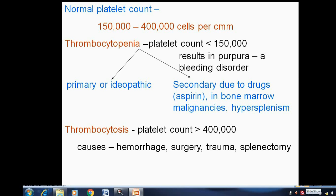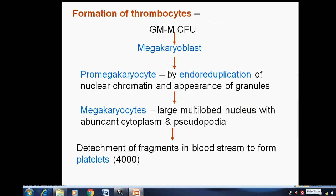In thrombocytopenia, the platelet count is less than 1.50 lakhs cells per cubic millimeter. It is either primary or secondary thrombocytopenia. Primary is mainly idiopathic; secondary thrombocytopenia is mainly associated with some pathology, such as drugs like aspirin, bone marrow malignancies, or hypersplenism.